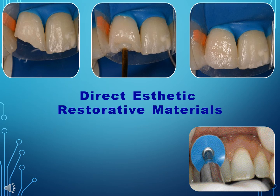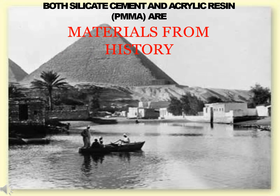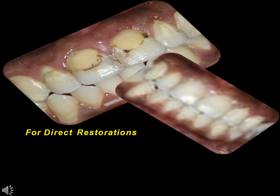Direct Aesthetic Restorative Materials. Both Silicate Cement and Acrylic Resin are materials from history, used for direct restorations.